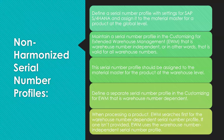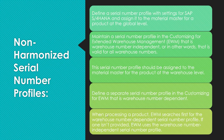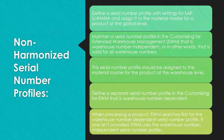After mapping S/4HANA to the dependent or independent profile, when the system searches for a serial number profile while processing a product, EWM searches first for a warehouse-number-dependent serial number profile. If there is no warehouse-dependent profile assigned, it will then select the independent warehouse profile.